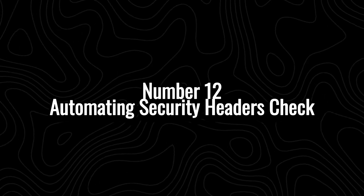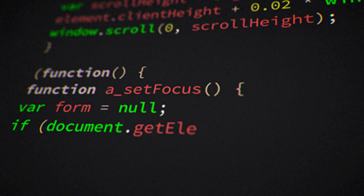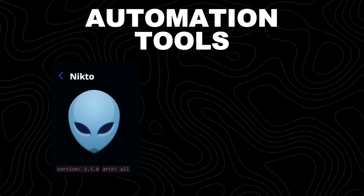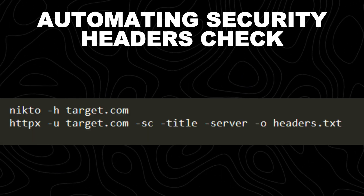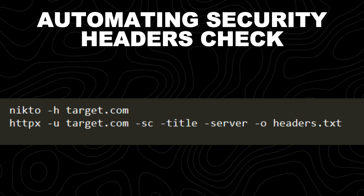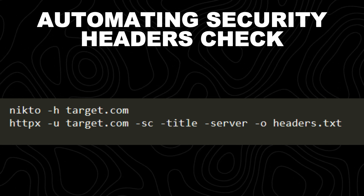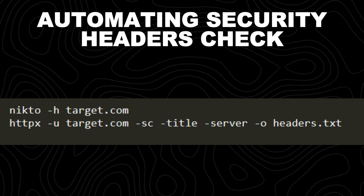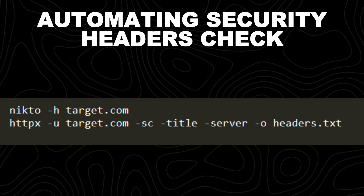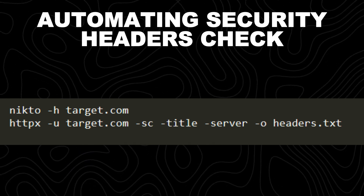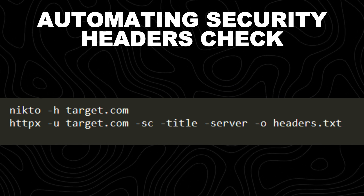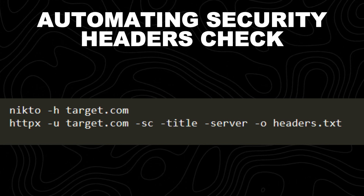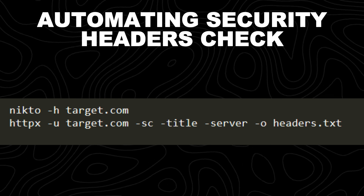Number 12: automating security headers check. Security headers protect web applications from attacks like XSS, clickjacking, and data injection. Missing or misconfigured security headers can expose a website to serious vulnerabilities. Tools like Nikto and HTTPX automate the process, making security assessments faster and more efficient. Nikto is a web vulnerability scanner that checks for security misconfigurations, outdated software, and known vulnerabilities; the -H option specifies the target website and scans for insecure HTTP headers, default credentials, and outdated components. HTTPX is a fast HTTP toolkit where -u specifies the target URL, -sc fetches the HTTP status code, -title extracts the web page title, -server identifies the web server software, and -o saves the results to a file.